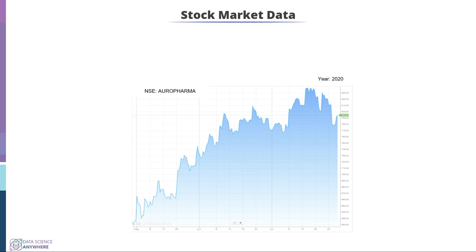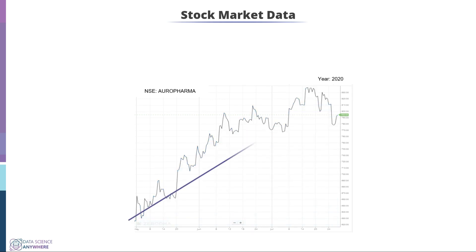Let's investigate and analyze its time series components. If you look into the data, it is increasing — to be more precise, from May to August the price of Aurobindo Pharma increases. Hence the trend line will look something like this, which is basically derived from the regression line.